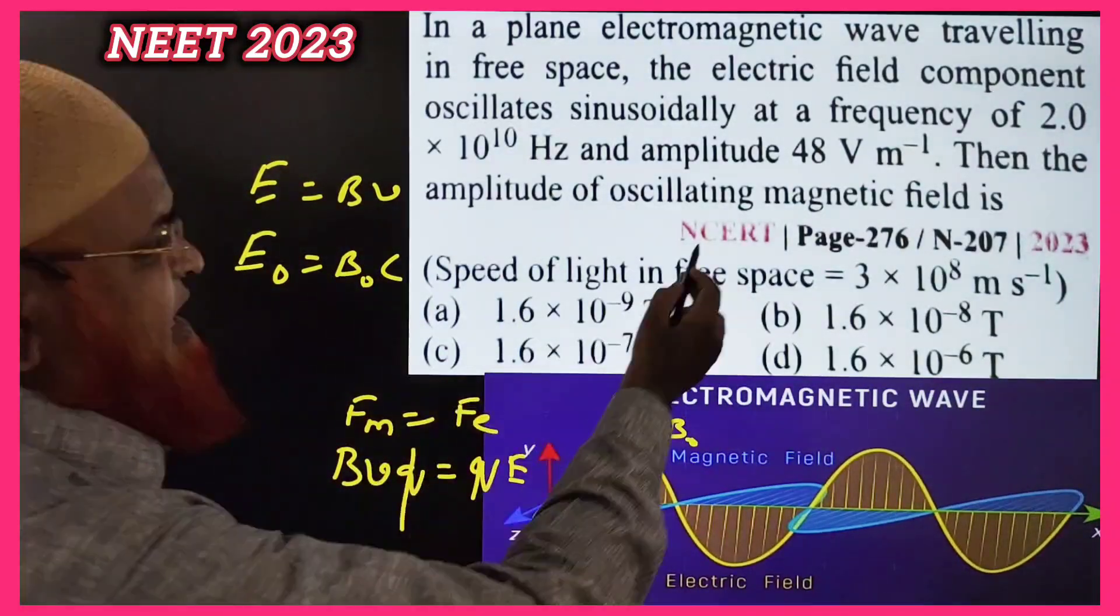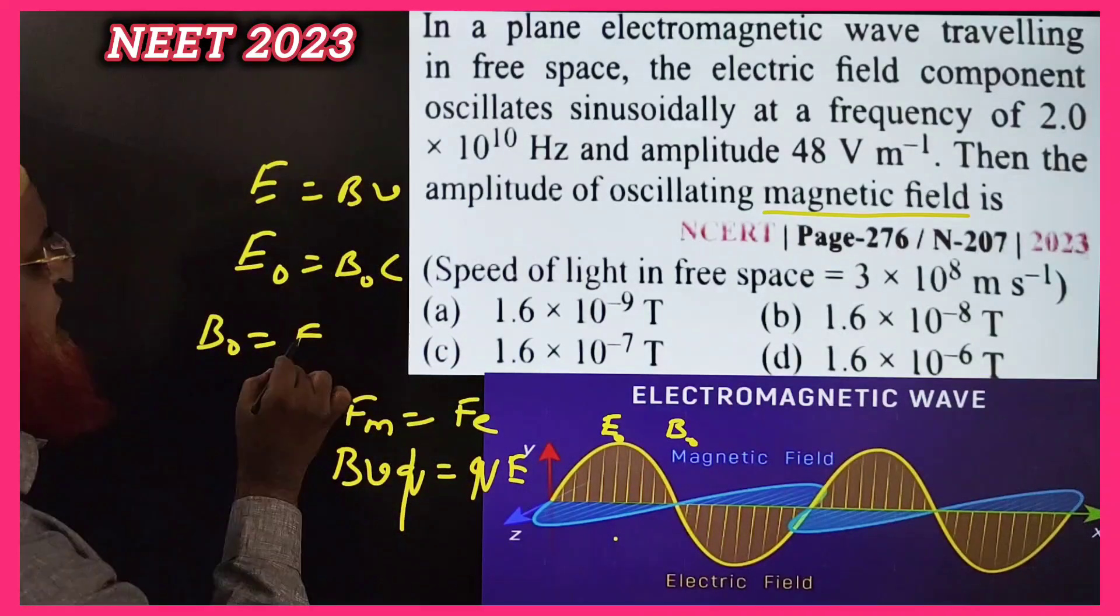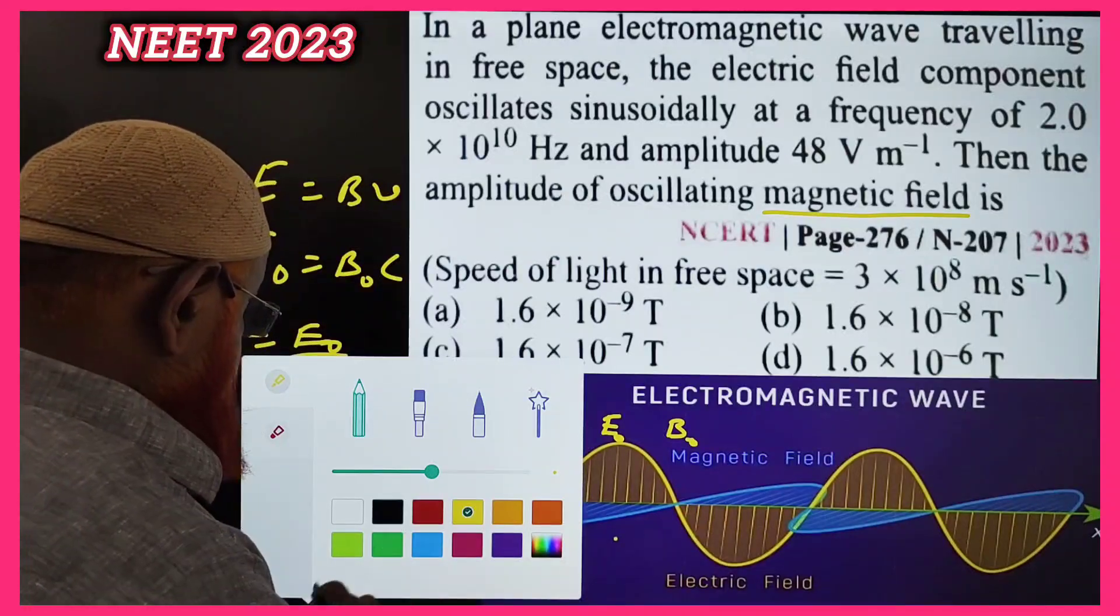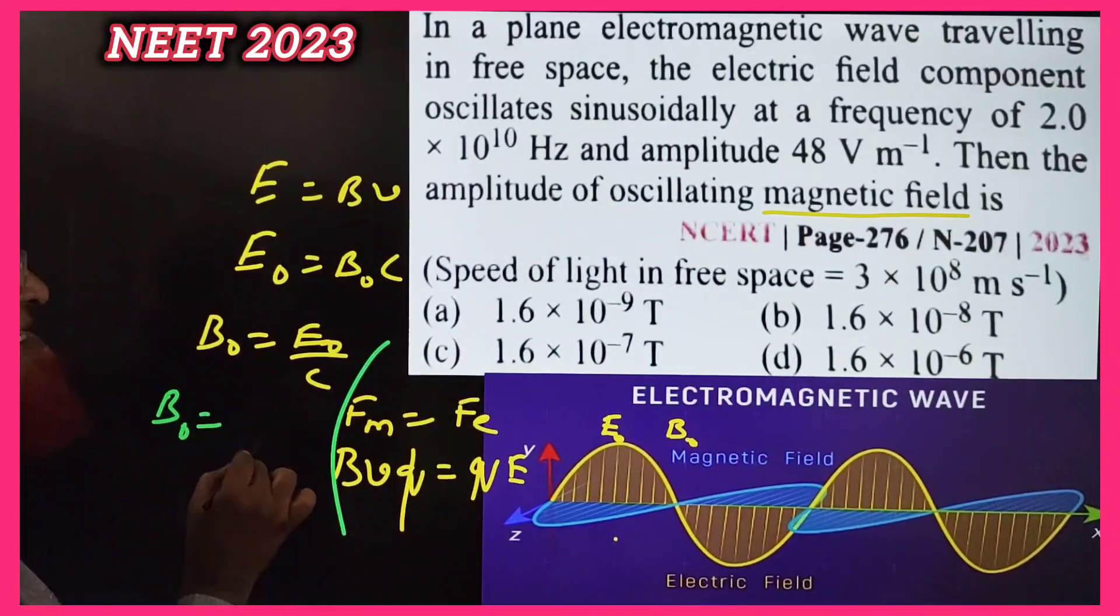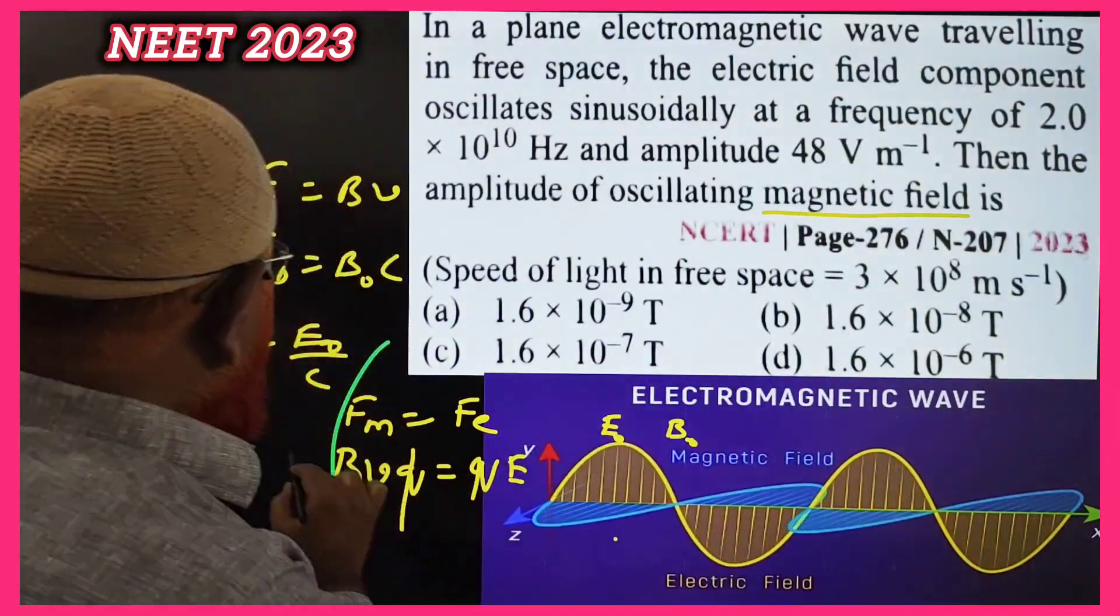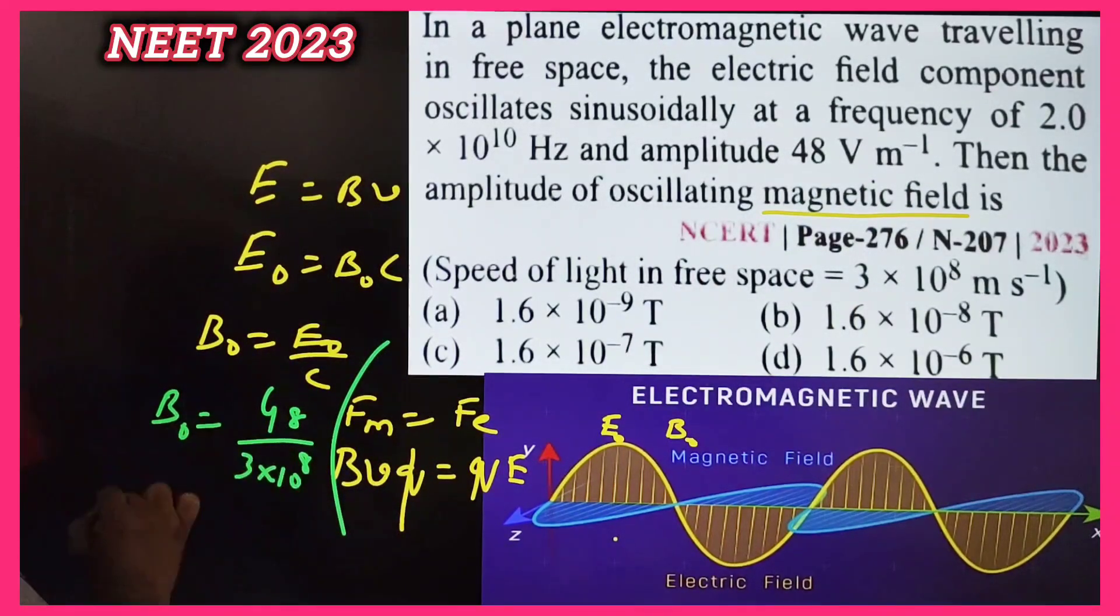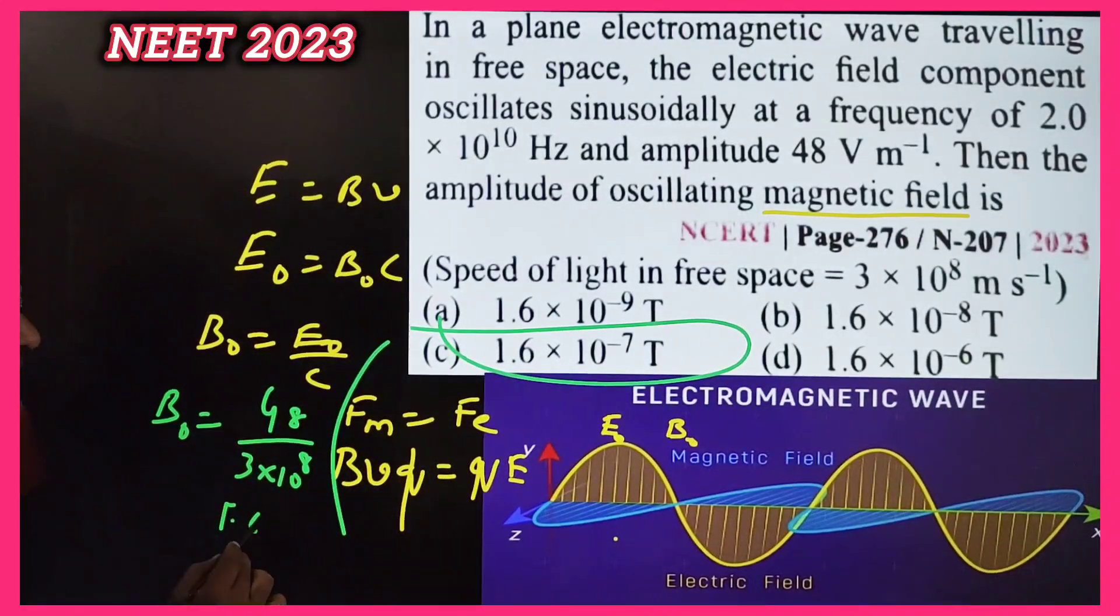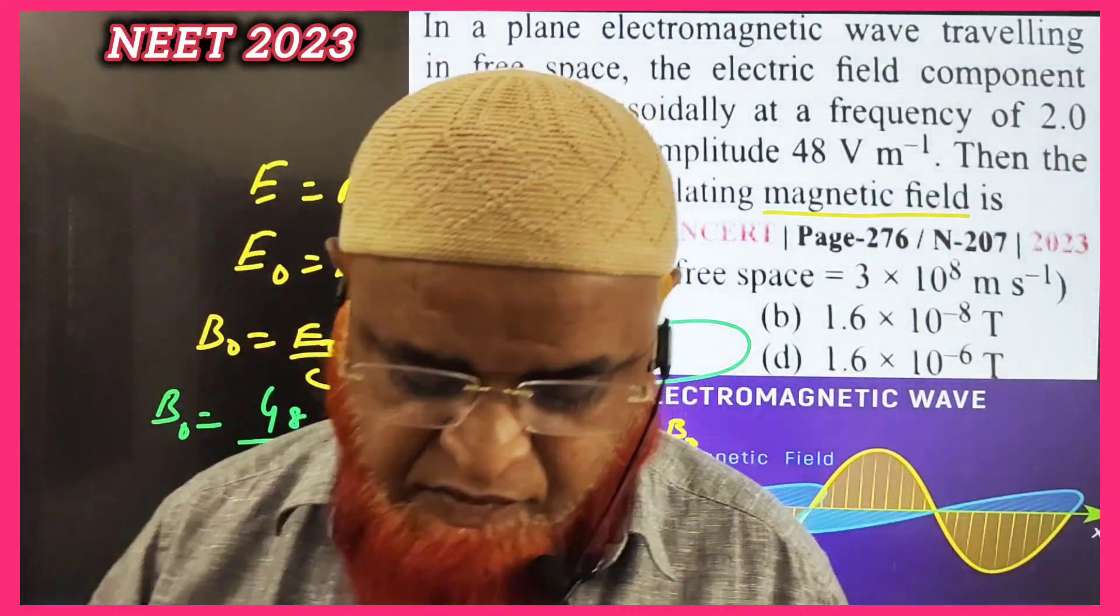She's asking us to find out the magnetic field, so B₀ is equal to E₀ by c. Then what happens? Let us see. So here you write B₀ is equal to E₀ - is already given as 48 - divided by 3 into 10⁸. You just solve, you will be getting 1.6 into 10⁻⁷ Tesla. Thank you very much.